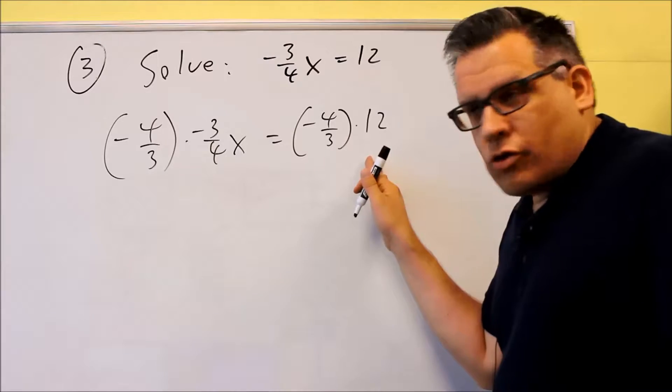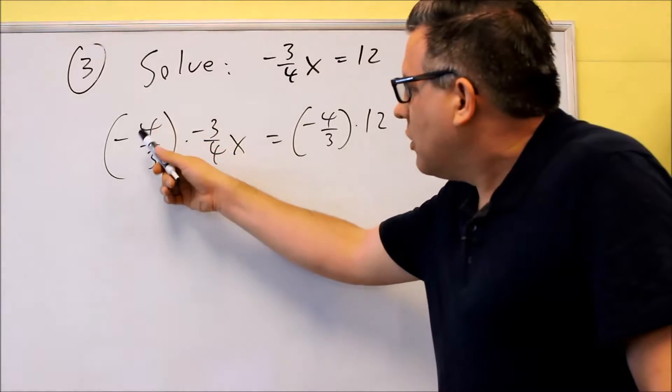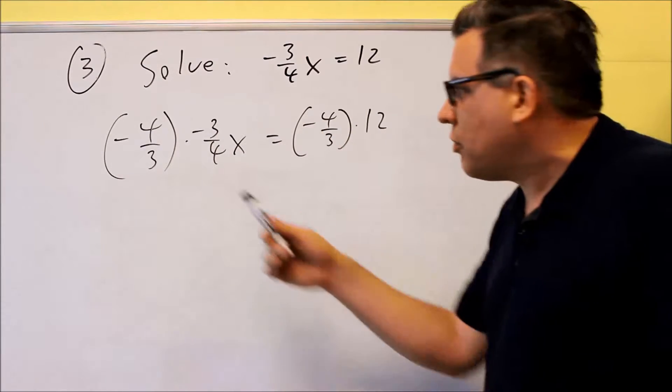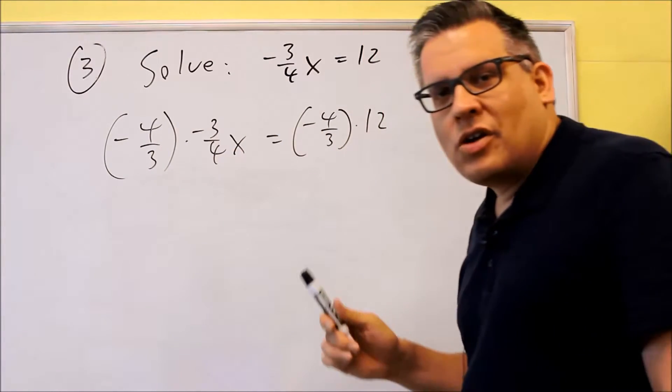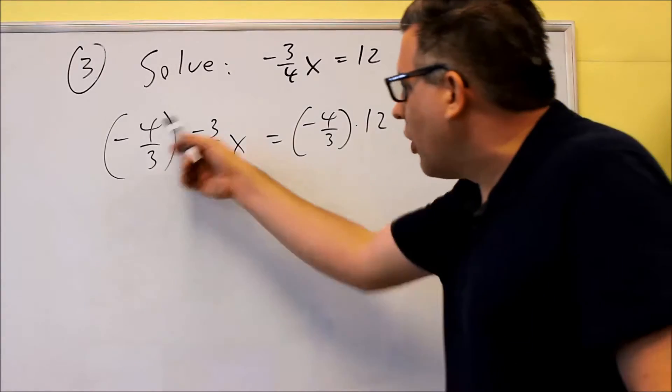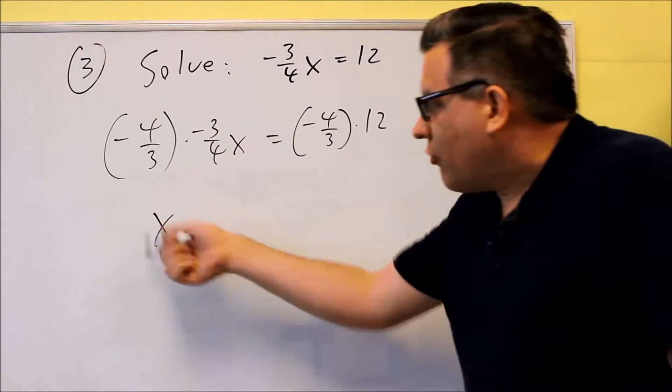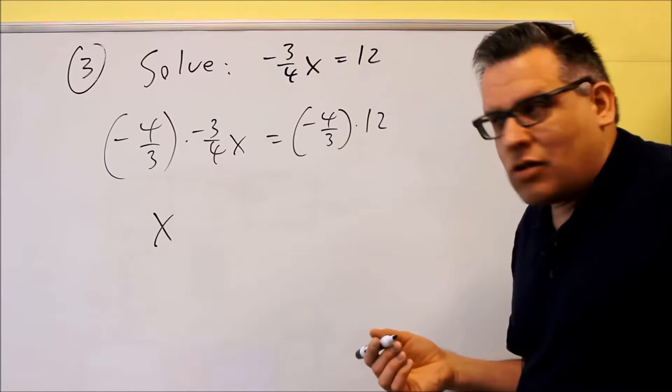Now, the reason why we're doing that is because you're going to notice that the fours cancel and the threes cancel, and negative negative gives you a positive, or if you multiply across the top, across the bottom, you'll get 12 over 12. Either way, you're going to get one X. And you don't have to show the one in front of the X. You can just leave that as regular X.